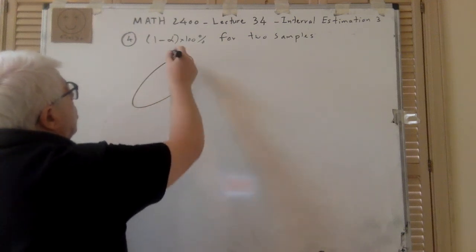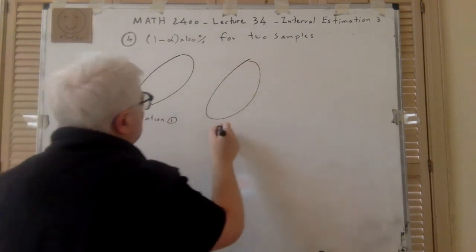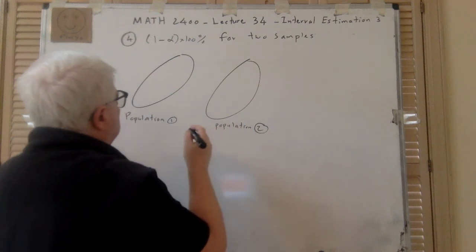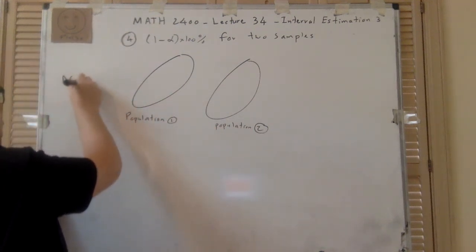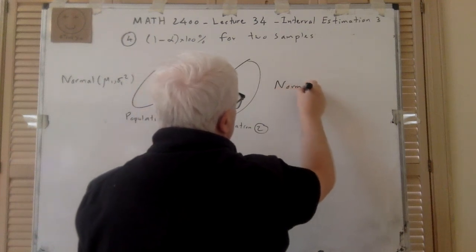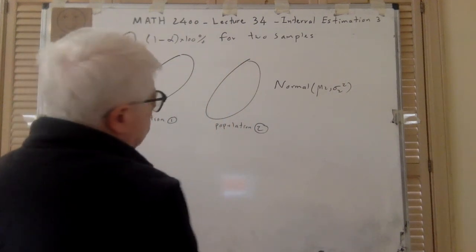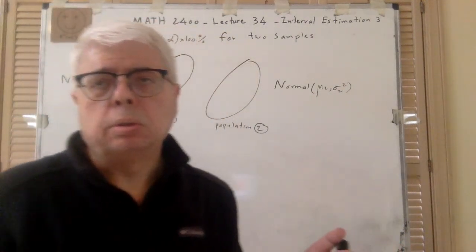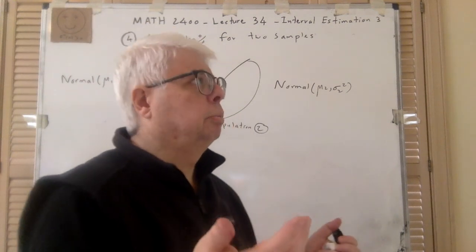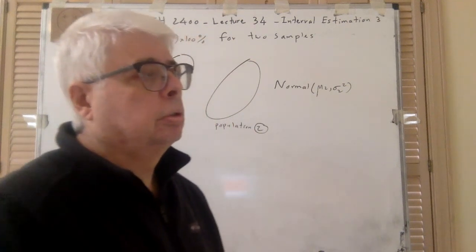So here we have two populations — population one and population two. Each one we can assume is normal: normal(μ1, σ1²) and normal(μ2, σ2²). This situation could be, say, like two companies producing something very similar — like producing cars, for example, the same model of cars like an SUV.